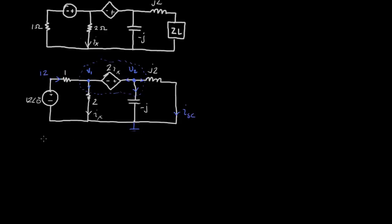So for KCL at the super node, I get 12 minus V1 over 1, which could just be 12 minus V1. This is going out here, so we'll call this negative, that's V1 over 2. This is also going out, so we'll put a negative sign here. This is V2 over negative J. And this is negative V2 over 2 over J2. And that equals 0.